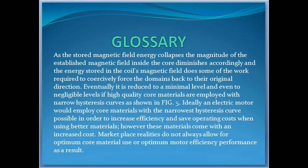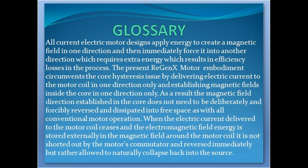As the stored magnetic field energy collapses, the magnitude of the established magnetic field inside the core diminishes accordingly, and the energy stored in the coil's magnetic field does some of the work required to coercively force the domains back to their original direction. Eventually it is reduced to a minimal level — even to negligible levels if high-quality core materials are employed with narrow hysteresis curves. Ideally an electric motor would employ core materials with the narrowest hysteresis curve possible in order to increase efficiency and save operating costs, but these materials come with an increased cost. Marketplace realities do not always allow for optimum core material use or optimum motor efficiency performance as a result. All current electric motor designs apply energy to create a magnetic field in one direction and then immediately force it into another direction, which requires extra energy and results in efficiency losses.